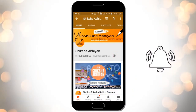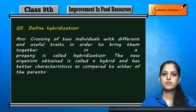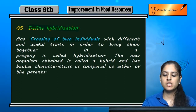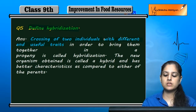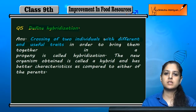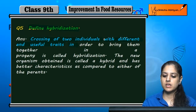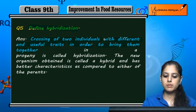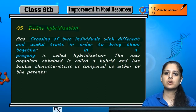Question number five: define hybridization. So if we cross over two individuals with different and useful traits, and we cross over them in order to bring together useful traits and different traits in their progeny.